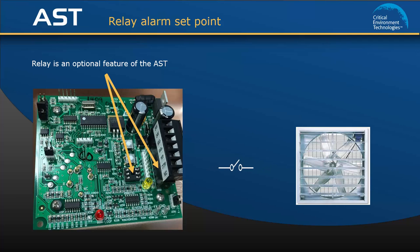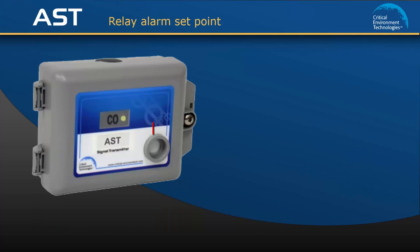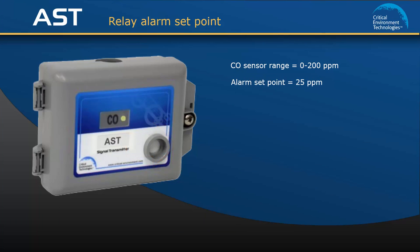In this example we have an electrochemical CO sensor with a range of 0 to 200 ppm, and we want to set our alarm set point to 25 ppm so that when the gas reading reaches or exceeds 25 ppm, the relay will de-energize and turn on an exhaust fan. The test point voltage range is 0 to 4 volts, where 0 volts equals 0 ppm and 4 volts equals 200 ppm.